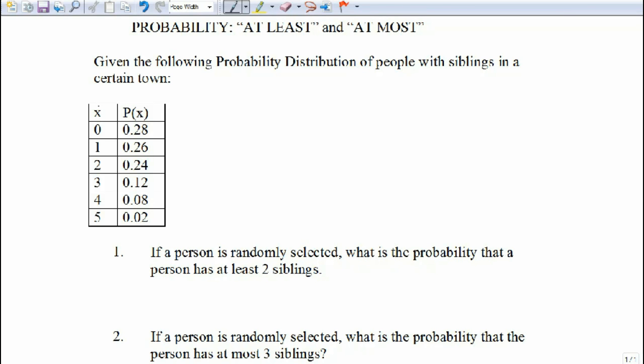Next is our random variable telling me how many siblings: 0, 1, 2, 3, 4, 5, and the probability of that happening is given as a decimal in each case.